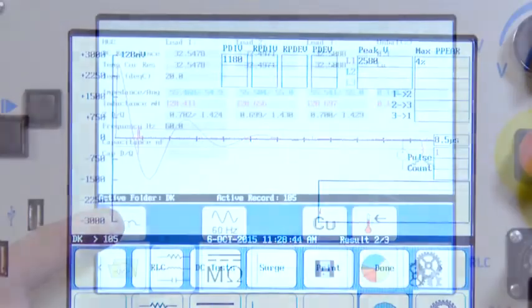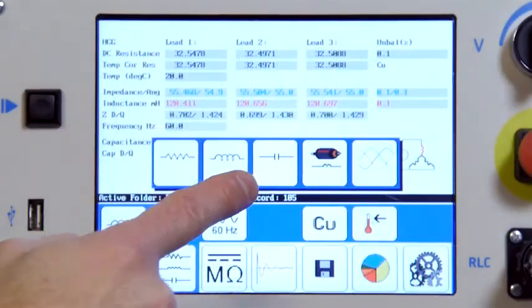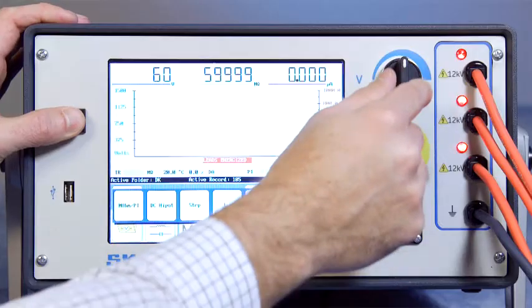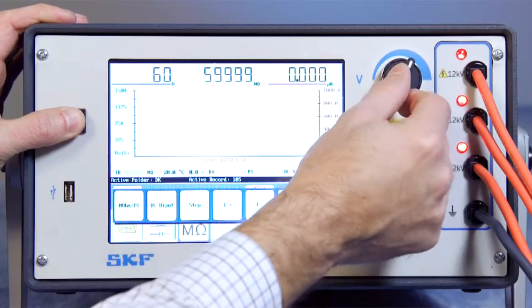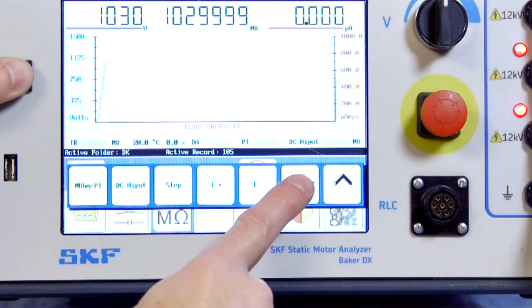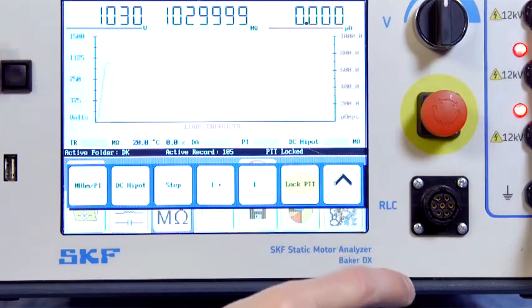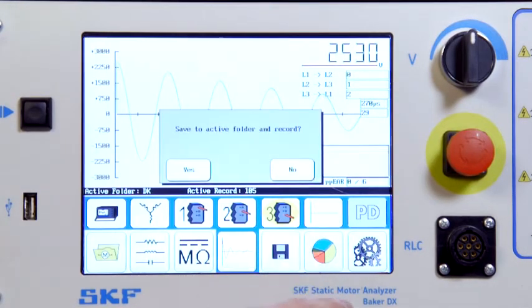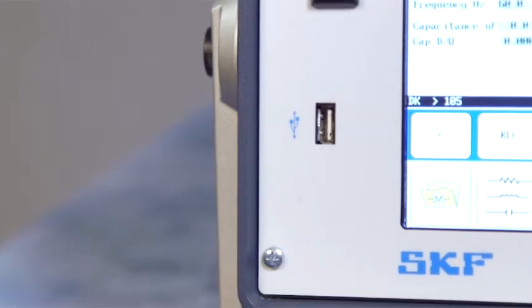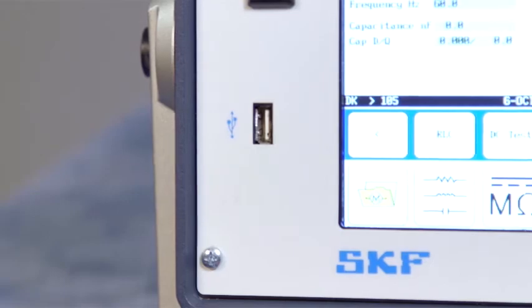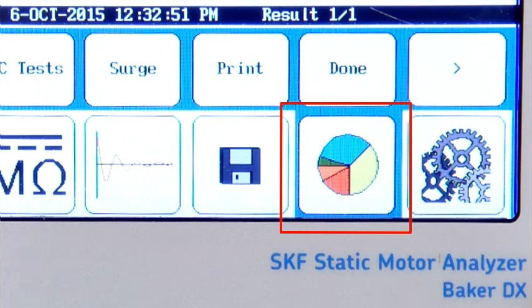To run a test, select the test type desired, select the lead if applicable, press the PTT button, and ramp the test voltage. For the long DC ground wall insulation tests, a PTT lock is available. Save test data by pressing the save file icon. Data can be exported via USB for archive and desktop report generation.